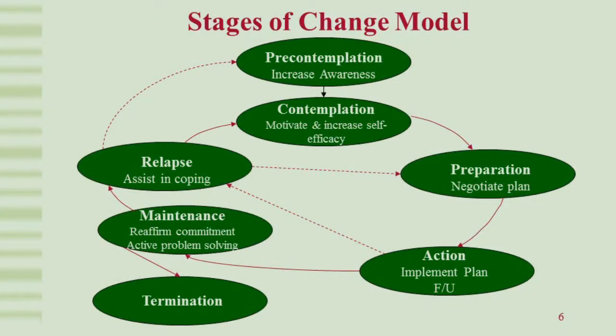So she moved from 'no problem,' to 'maybe there is a problem,' to 'I'm not sure what to do about it' — but she explored options, made a plan, and put it into action. Where a lot of people get hung up with stages of change is they think action is the only thing, and they move from pre-contemplation to action without doing the other steps. Outcomes aren't quite as good when you skip steps.